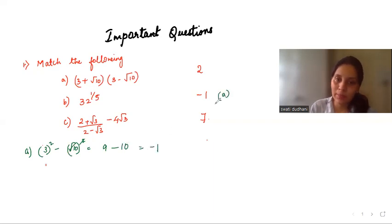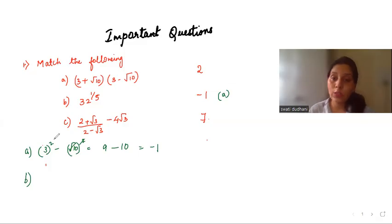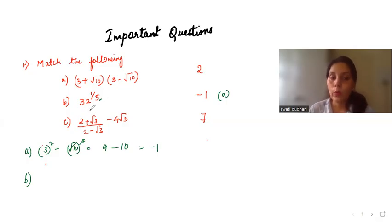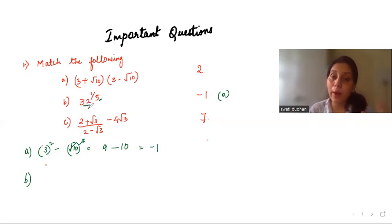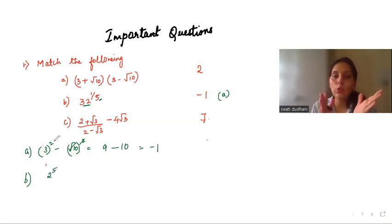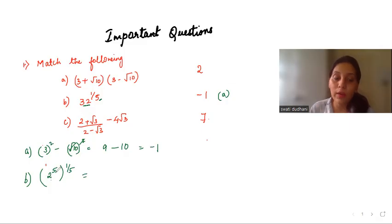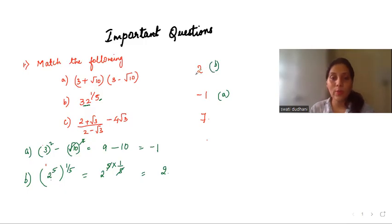Coming to part (b): 32^(1/5). For these kinds of questions, check the denominator of the power — it is 5. Try to make the base such that you get a power of 5 so it cancels. 32 can be written as 2⁵, so we get (2⁵)^(1/5). Applying the law (aᵐ)ⁿ = aᵐⁿ, the 5s cancel and the answer is 2.